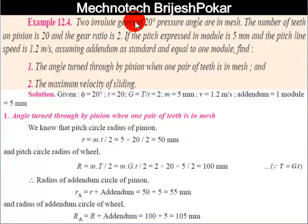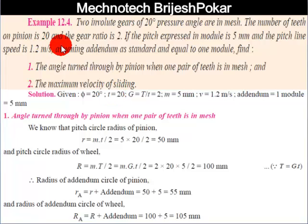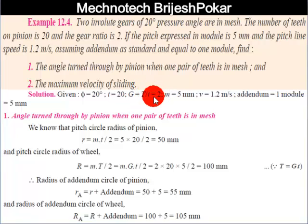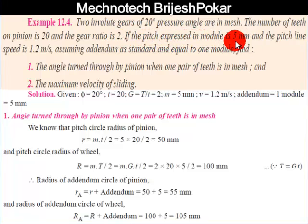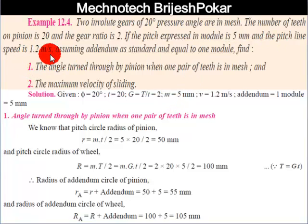The gear profile is involute and pressure angle φ is 20 degrees. The number of teeth on the pinion is 20, so small t = 20, and the gear ratio is 2. The gear ratio is the ratio of number of teeth on the driving wheel to the pinion. The pitch expressed in module is 5 mm, so module m = 5 mm. The pitch line speed v = 1.2 meters per second.